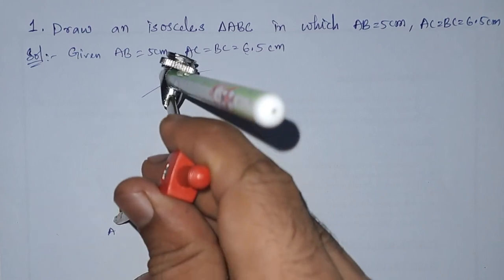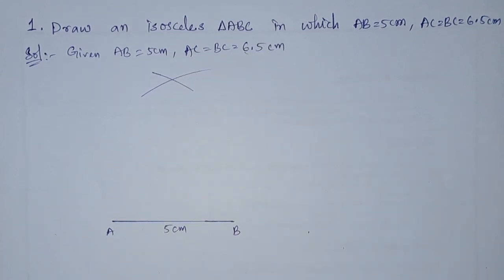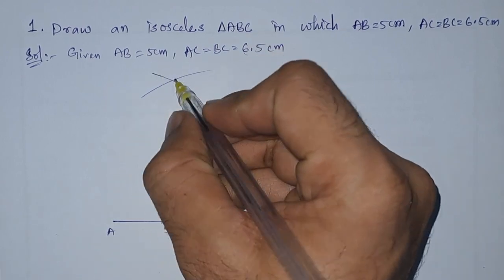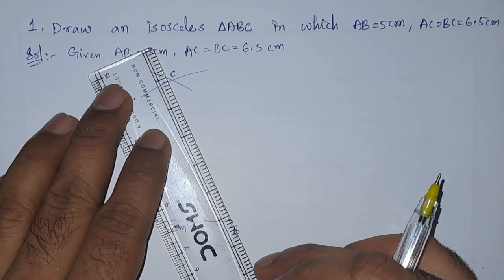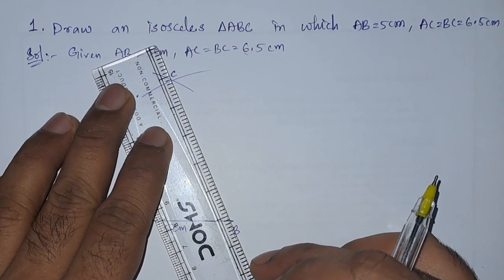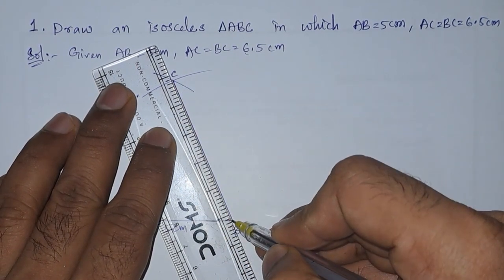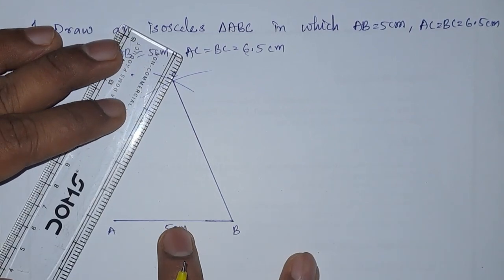Also from B. So these two arcs are meeting at one point. The point is nothing but C. Now we will join BC and AC. So let us join BC, and here it is.